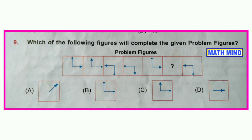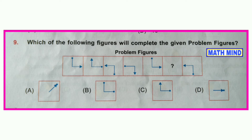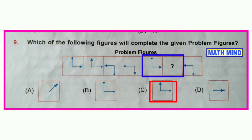Question number nine: Which of the following figures will complete the given problem figures? Taking the first two figures, the circle and arrow are interchanged with each other. Similarly in the next two figures, both the circle and arrow are interchanged. Regarding this pattern, in the next two figures option C is correct — the position of both figures is the same, only the arrow and circle interchange their positions.